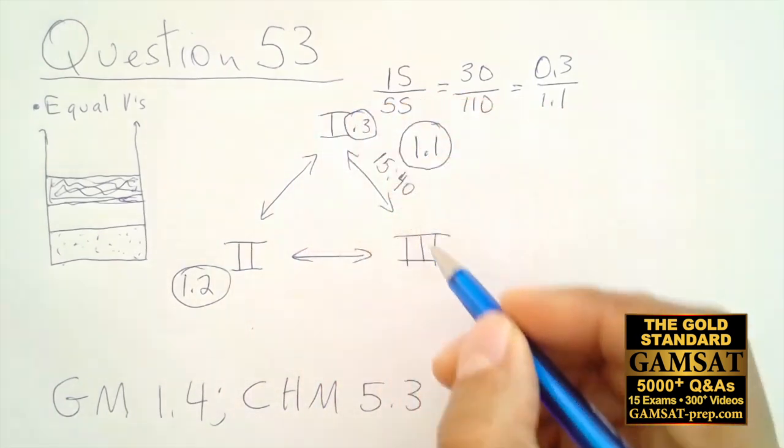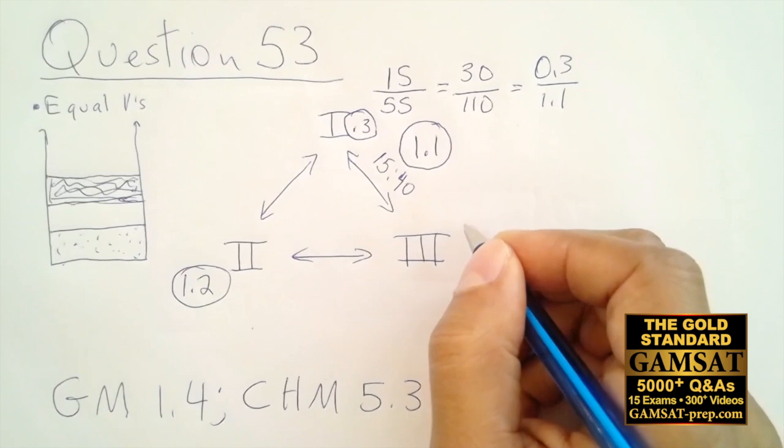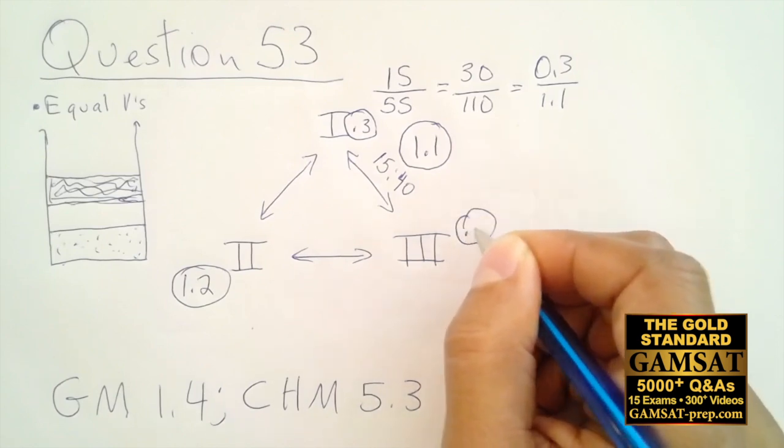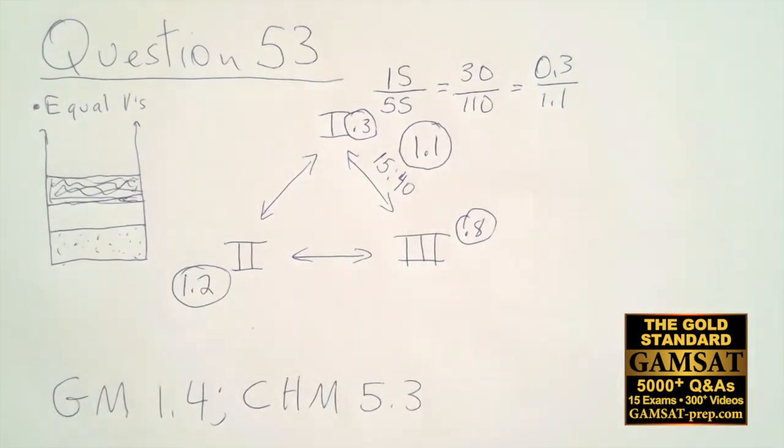So that means Roman numeral 1 has 0.3 moles in it, and therefore the rest has to be Roman numeral 3, which is going to be 0.8 moles. Here's our ratio, 1 to 2 to 3 is 3 to 12 to 8—just multiply through by 10—and that gives you answer choice A.